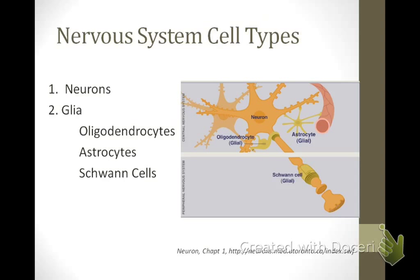There are two main types of cells in the nervous system: neurons and glia. Neurons are the most recognizable cell type, and the majority of this course will focus on neurons.